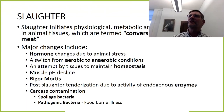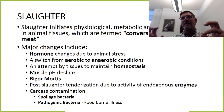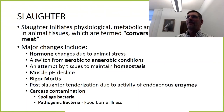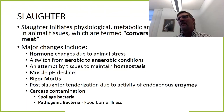Some of the major changes include hormone changes due to animal stress, a switch from aerobic to anaerobic conditions, an attempt by the tissues to maintain homeostasis — to stay physiologically functional. The muscle pH declines, rigor mortis sets in eventually, and we have some post-slaughter tenderization due to endogenous enzymes. We also have some contamination from spoilage or pathogenic bacteria, viruses, and other things.